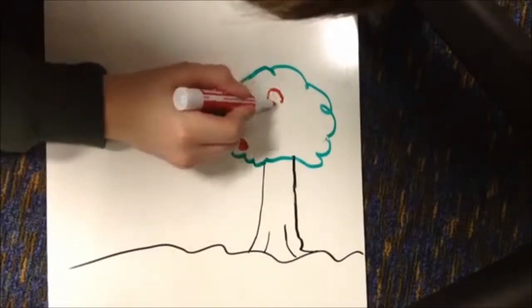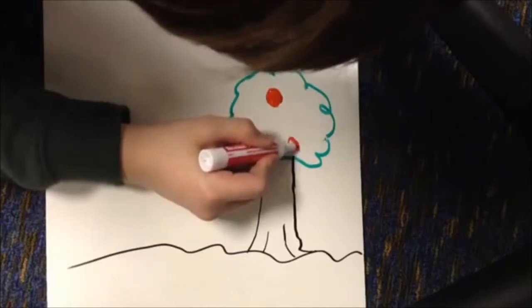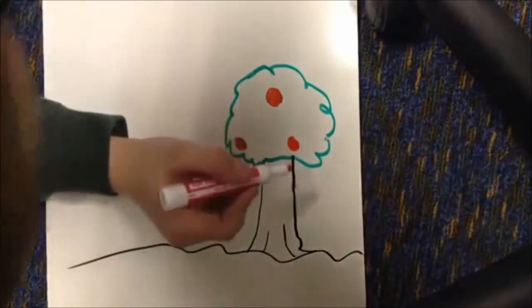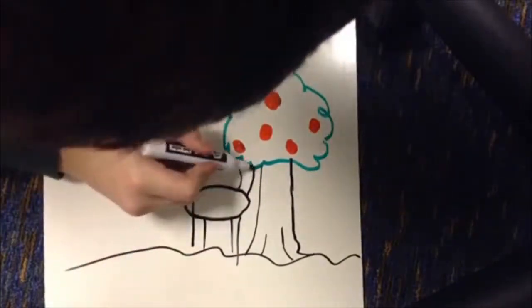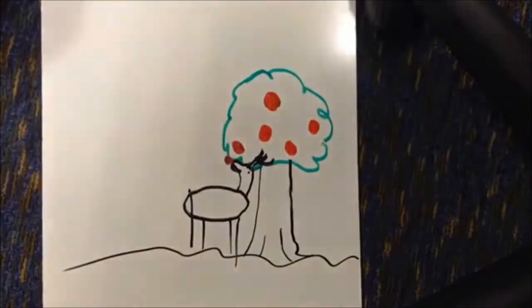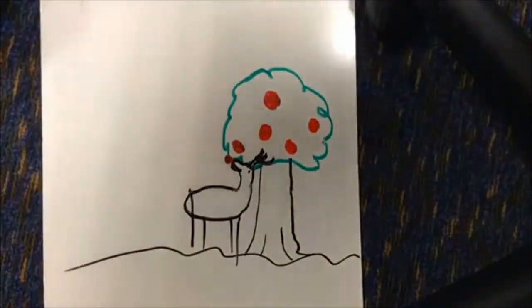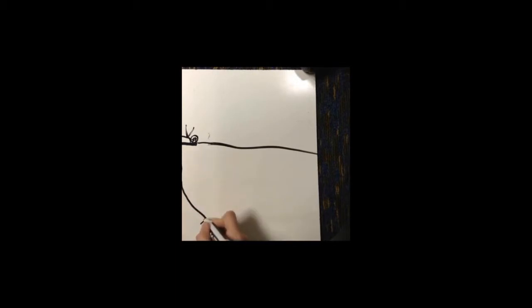The trees will then produce some sort of edible leaf or fruit. And this leaf or fruit will be eaten by some animal.